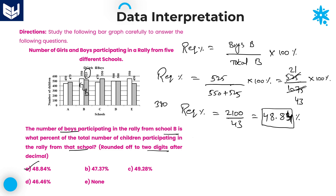Option A is the right answer. When options are nearby values, it is better to go with exact values rather than approximations. In this way, you need to solve questions related to this model. I hope you understood each and every problem in this session. Thank you, thanks for watching.